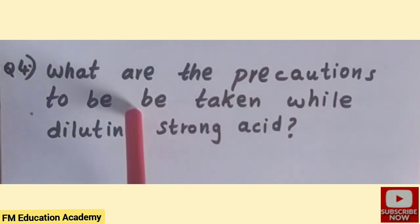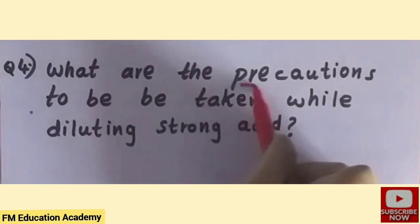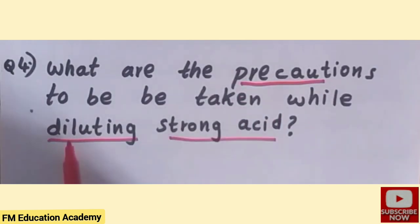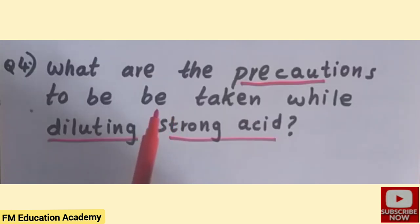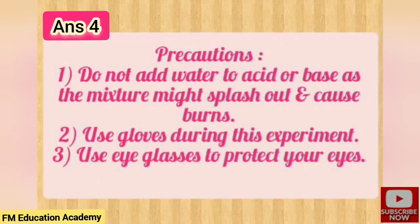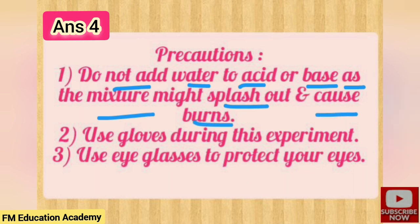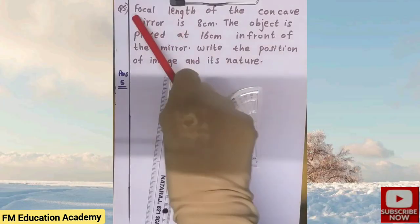Question 4: what are the precautions to be taken while diluting a strong acid? Diluting means mixing water with the acid to reduce its effect. The precautions are: first, do not add water to acid or base as the mixture might splatter and cause burns — instead add acid or base to water. Second, use gloves during the experiment. Third, use eyeglasses to protect your eyes.